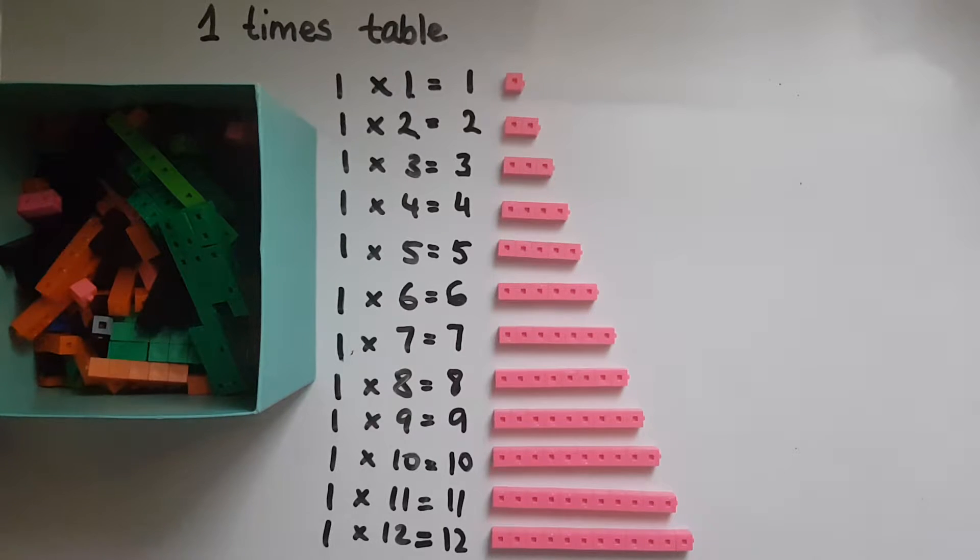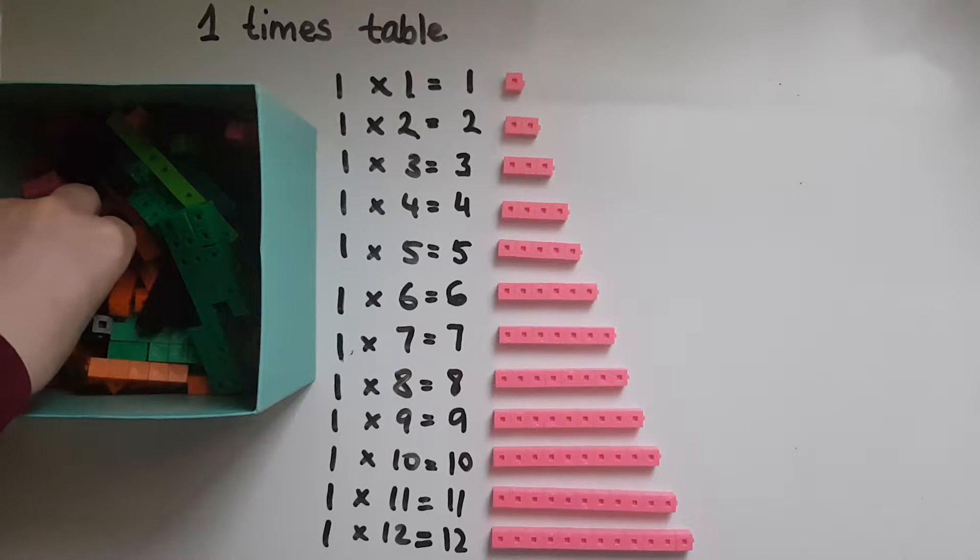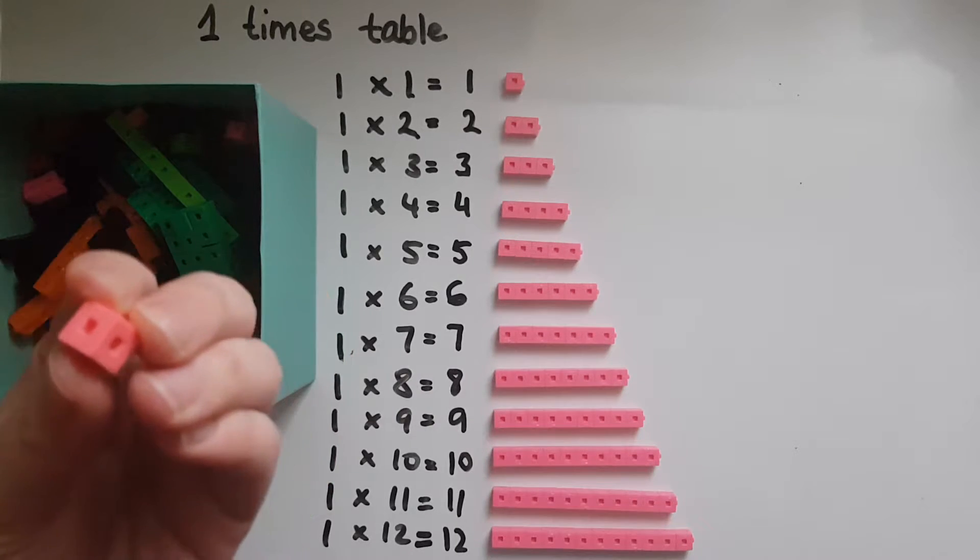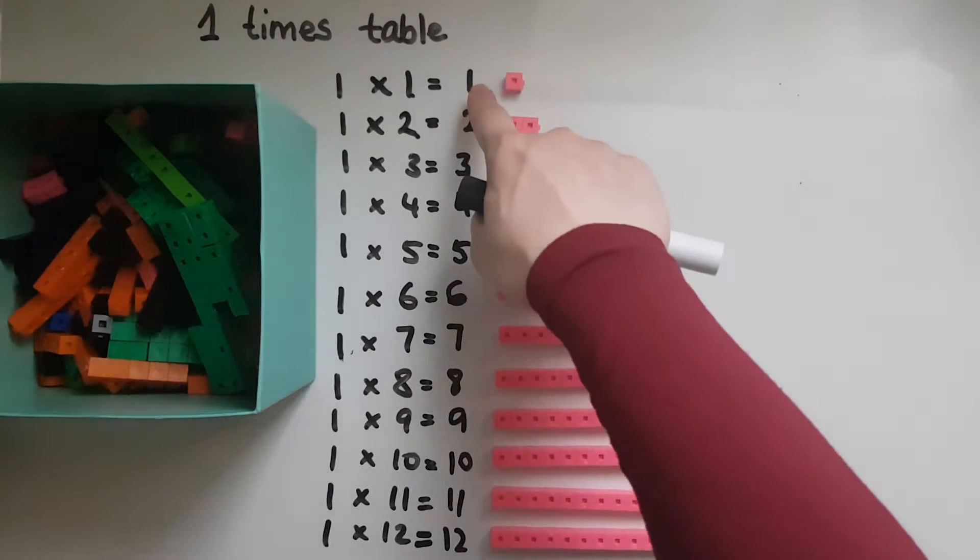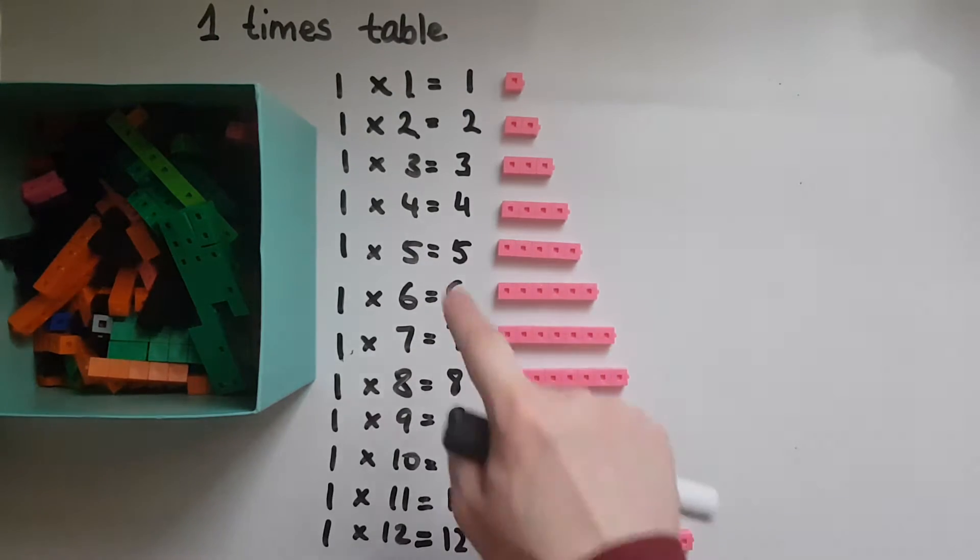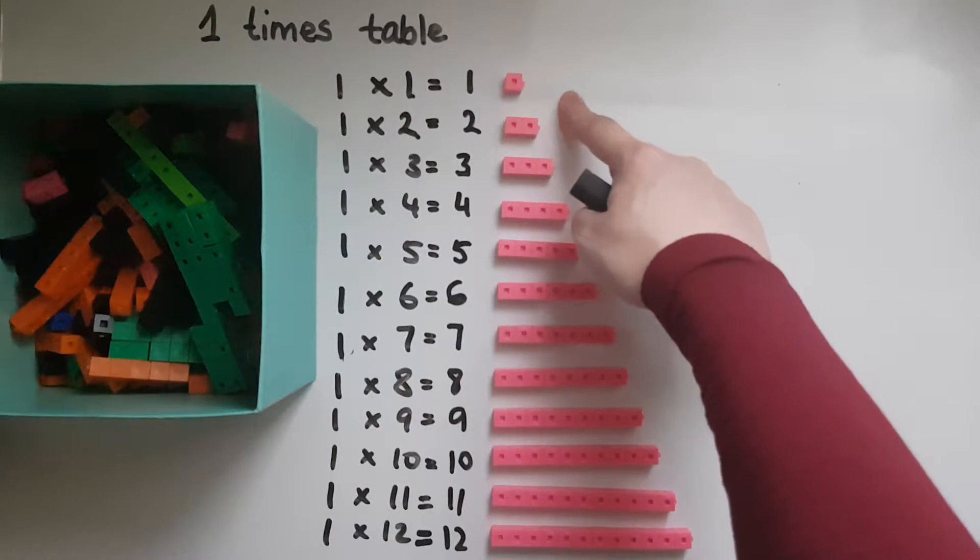So I've got this box and if I put my hand in once to get one of these cubes, I'll end up with one cube. So one times one equals one.